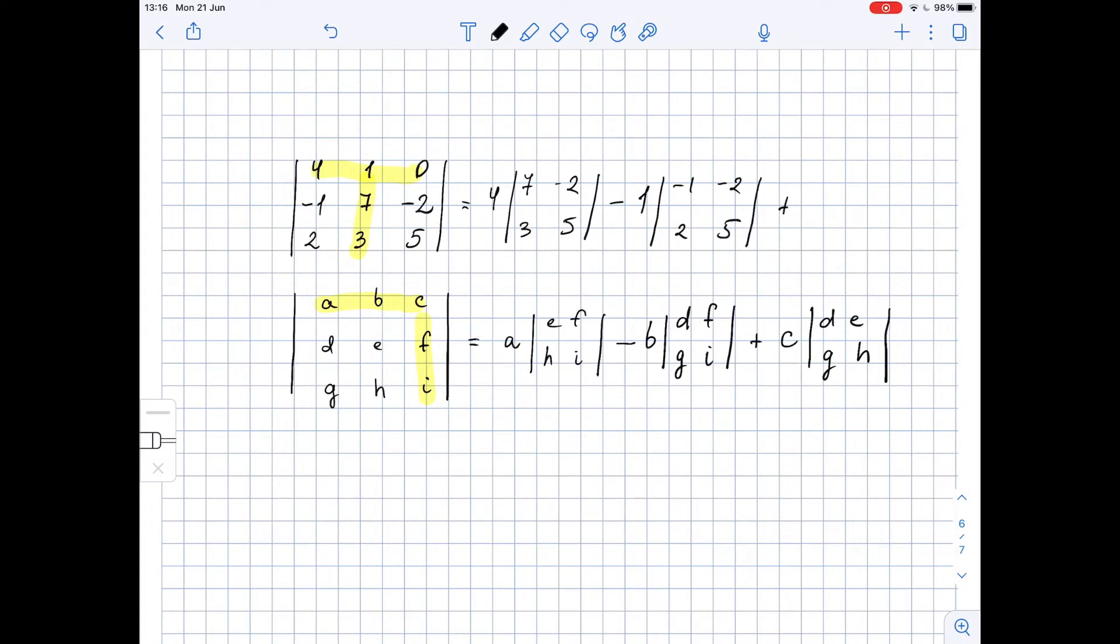Plus the third element of the first row, so 0. And now we ignore the first row and the third column. So here we have times negative 1, 7, 2, 3.